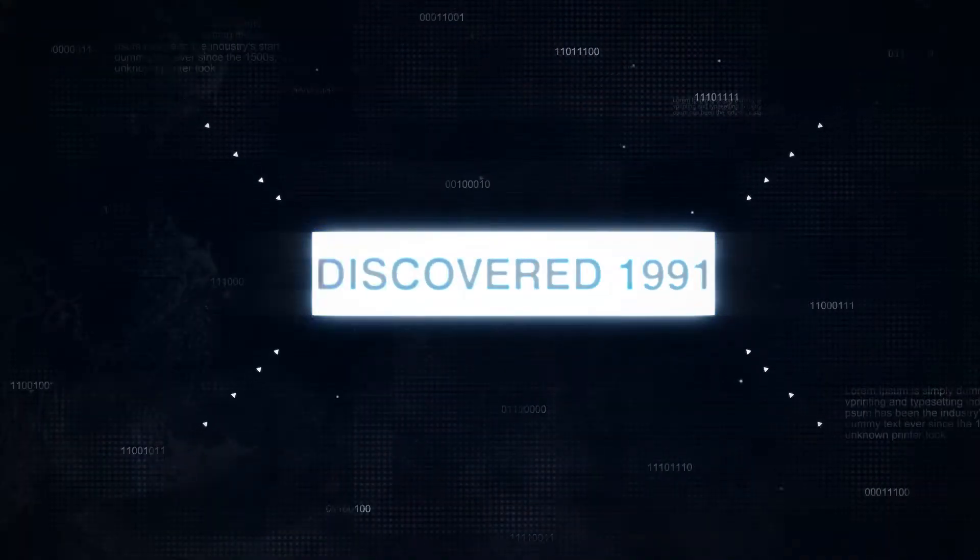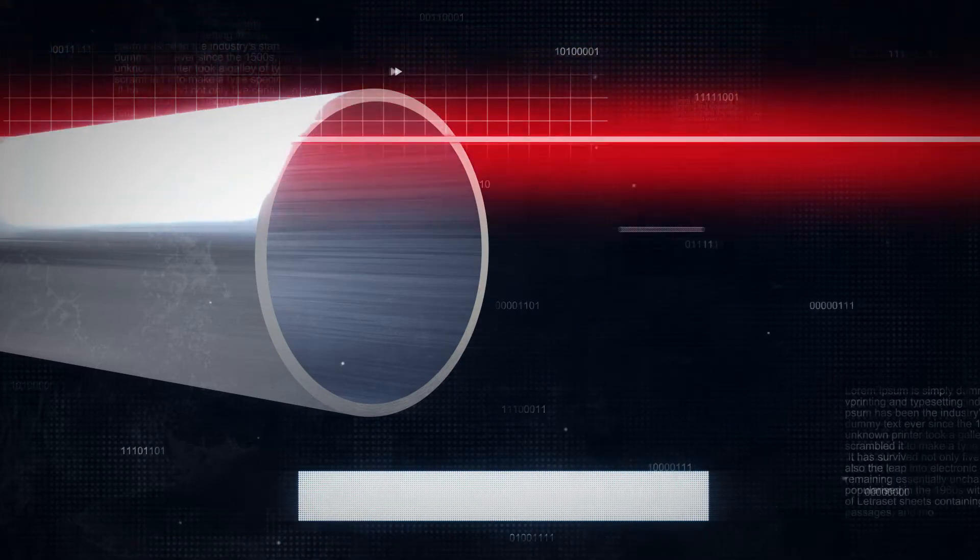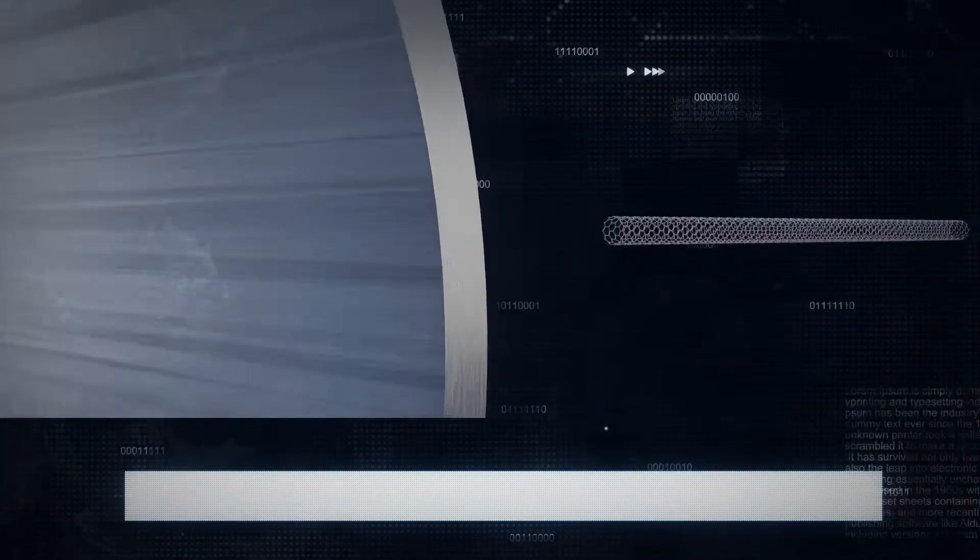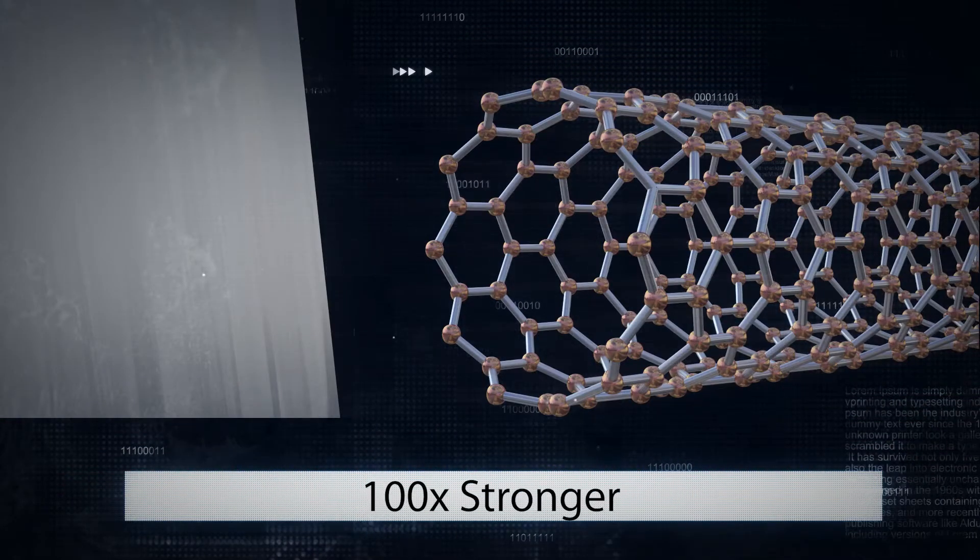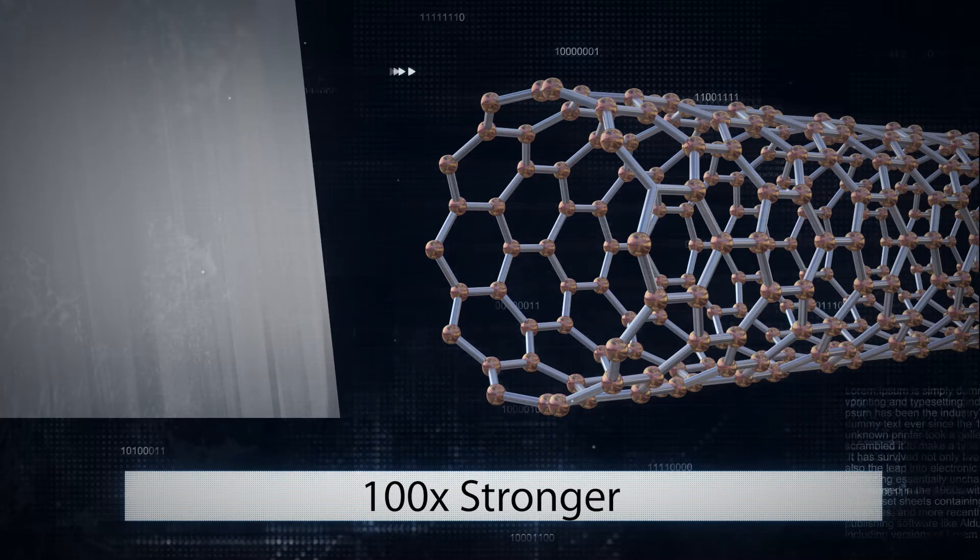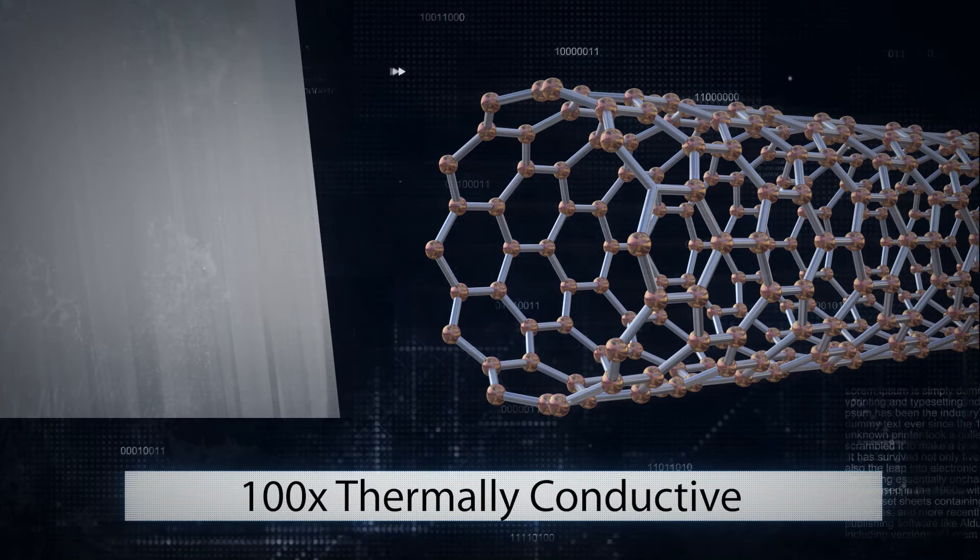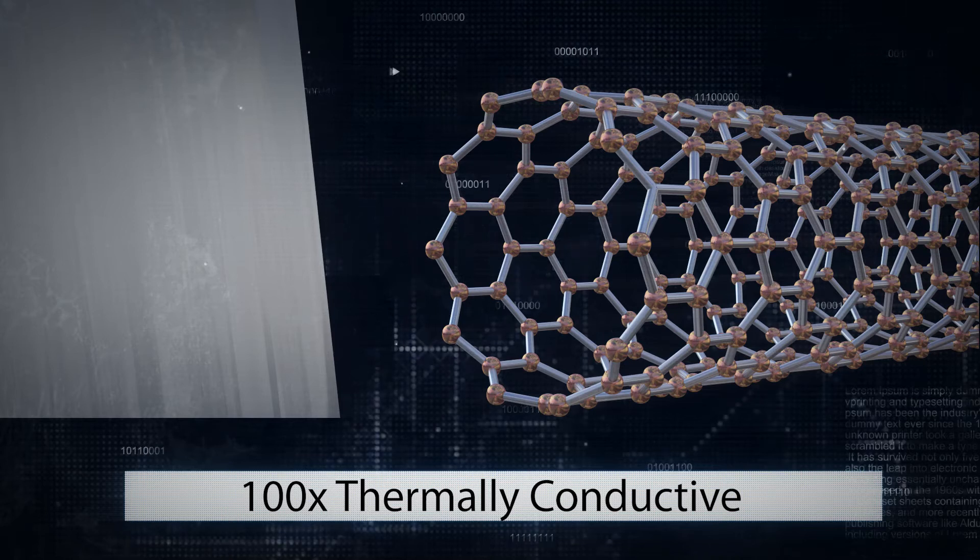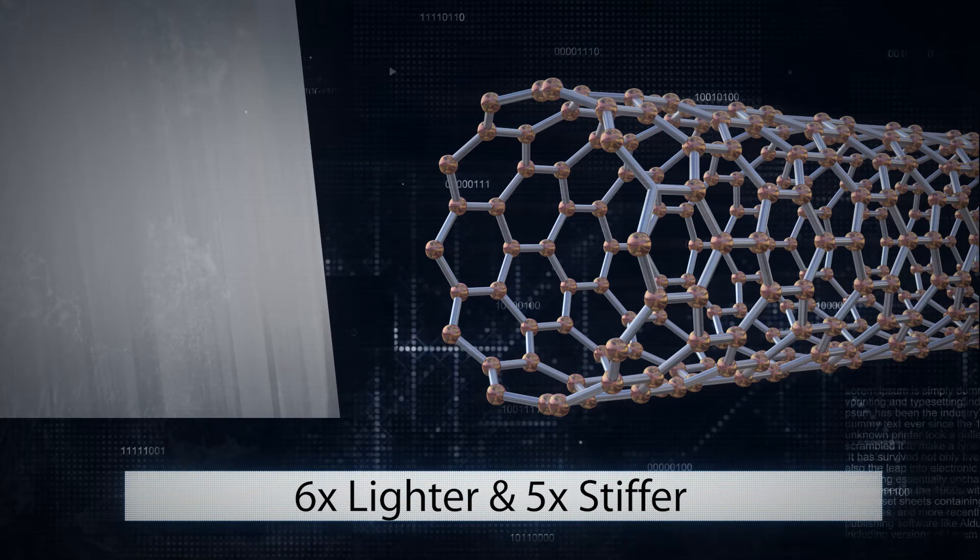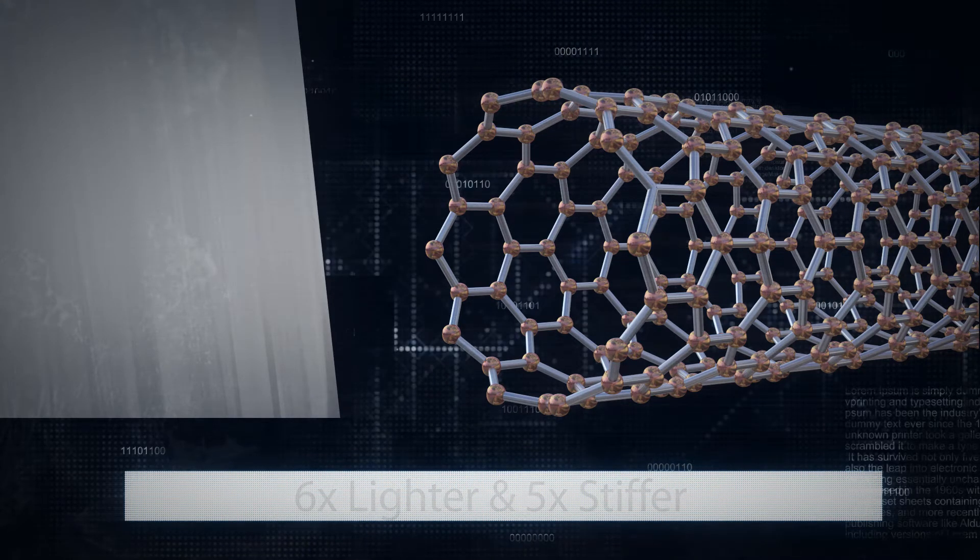Discovered in 1991 and hailed as the next revolution in material science due to their unique properties, carbon nanotubes are 100 times stronger and thermally conductive compared to steel. They are also 6 times lighter and 5 times stiffer.